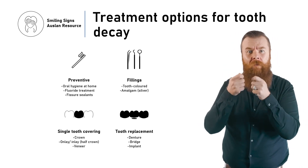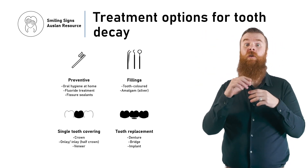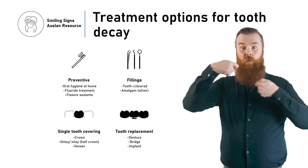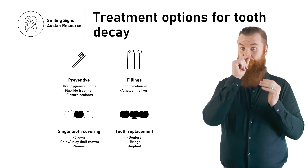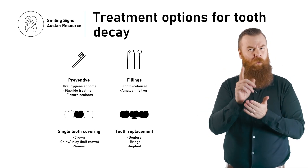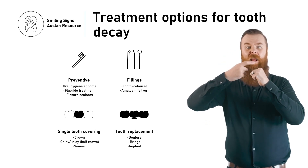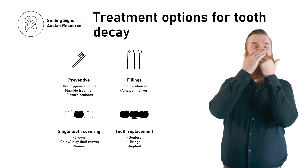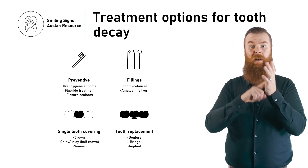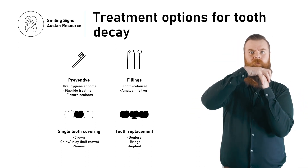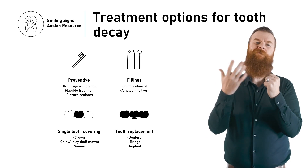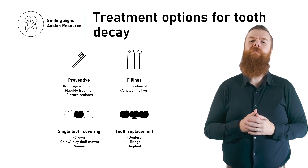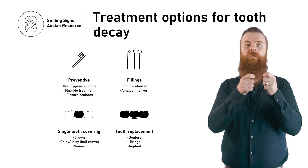Early tooth decay can be stopped when it is a white spot, which is often done using fluoride. Most tooth decay can be fixed with a filling. Some badly broken down teeth may need extra treatments, such as a dental crown. If a tooth needs to be removed, your dentist will tell you about the different ways to fill the space. This video will only focus on preventive treatments. Find out more information about these other options in other Smiling Signs videos.